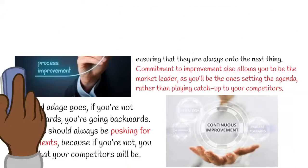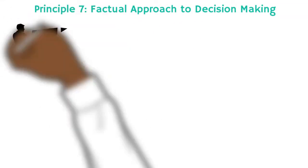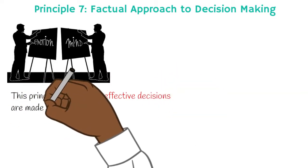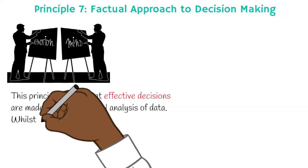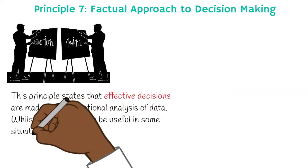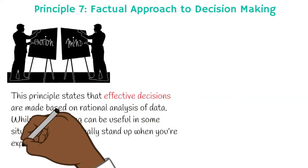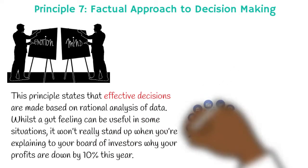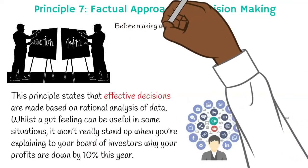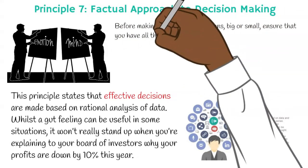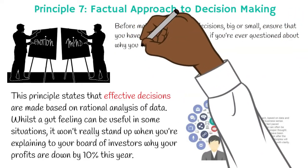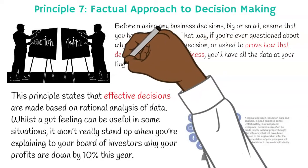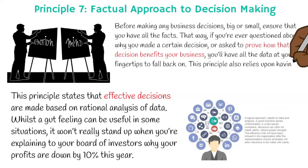Principle seven: factual approach to decision making. This principle states that effective decisions are made based on rational analysis of data. Whilst a gut feeling can be useful in some situations, it won't really stand up when you're explaining to your board of investors why your profits are down by 10% this year. Before making any business decisions, big or small, ensure that you have all the facts. That way, if you're ever questioned about why you made certain decisions or asked to prove how that decision benefits your business, you have all the data at your fingertips to fall back on. This principle also relies upon having access to reliable and accurate data — another vital aspect for a modern-day business.